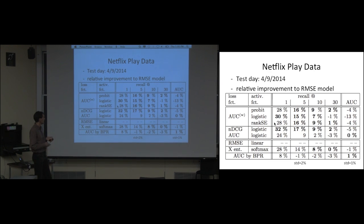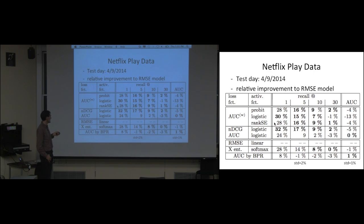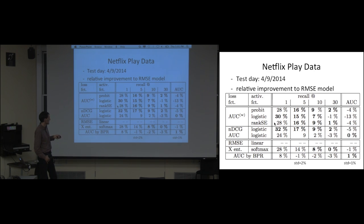Similar results were obtained on real Netflix play data from about a year ago. These are relative numbers compared to the baseline model described at the beginning. Models optimized for the head of the distribution perform well at the top, while models optimizing AUC show slightly better AUC but not much better overall. The most important thing is optimizing the head of the distribution.